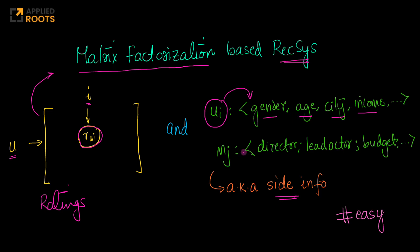Similarly, imagine we have an item or a movie J. For this movie J, which is basically your items, imagine if this is for Netflix or any movie recommendation system — a movie can also have features. For example, if your items are movies, you can have the name of the director, the name of the lead actor, the budget of the movie, the duration of the movie, the language of the movie, and many details like that.